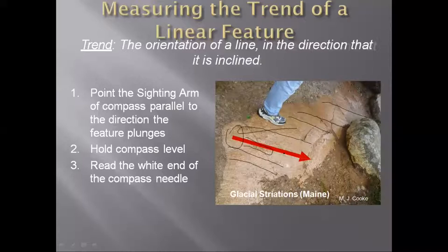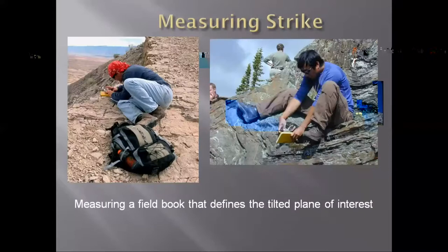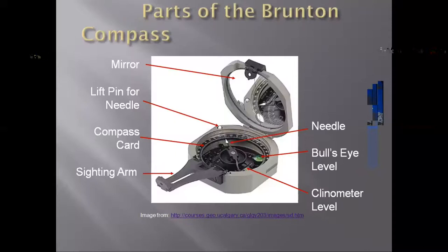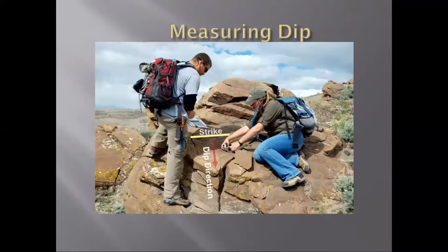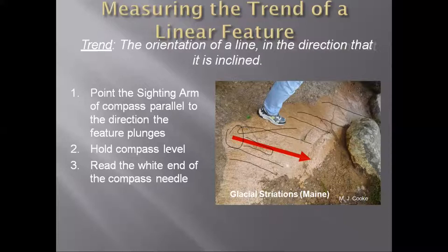Then we try to level the compass and hold the needle, and then we release the white end of the compass needle. This is the white end of the compass. These two things — the sighting arm and the white end — we use for making the trend of the rock.